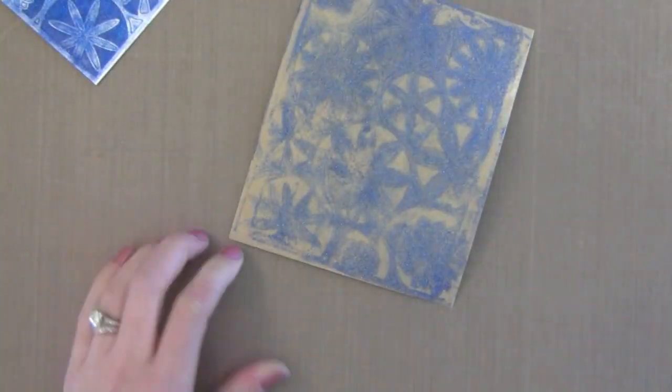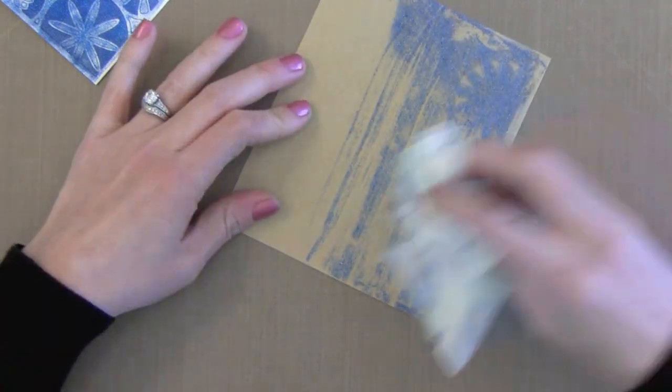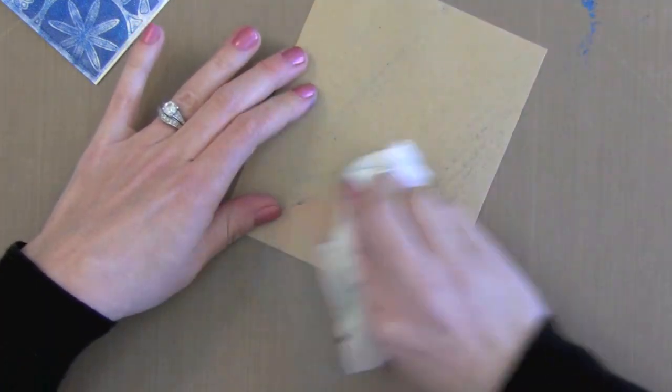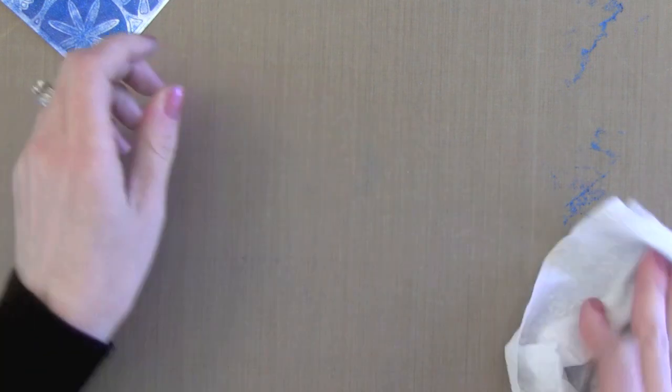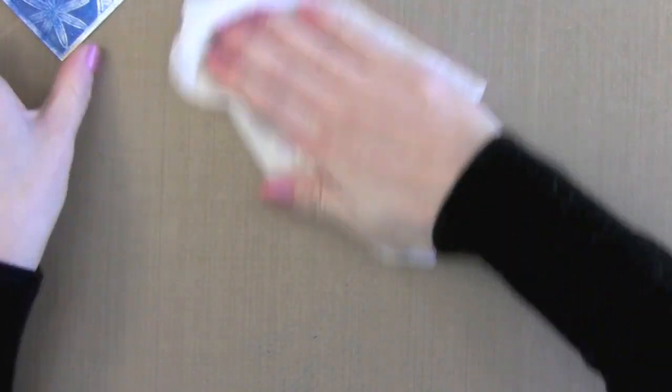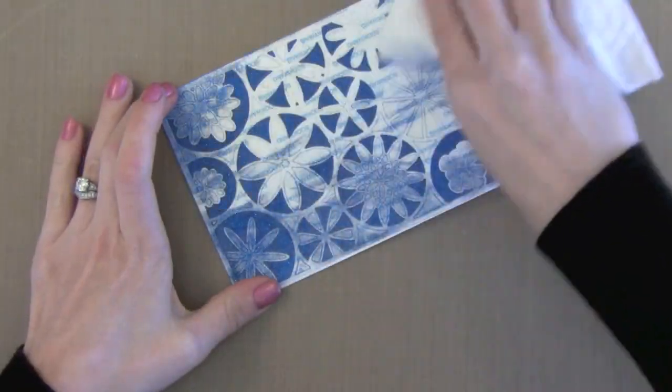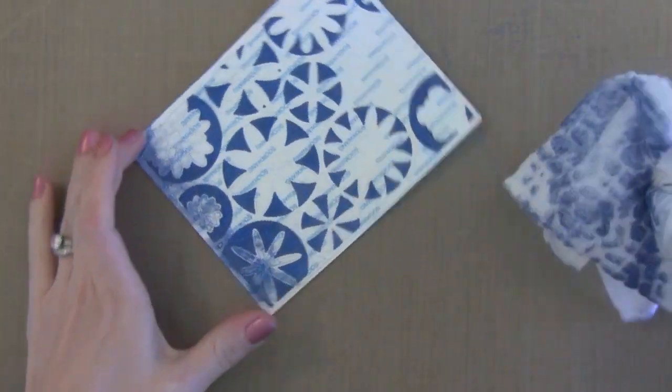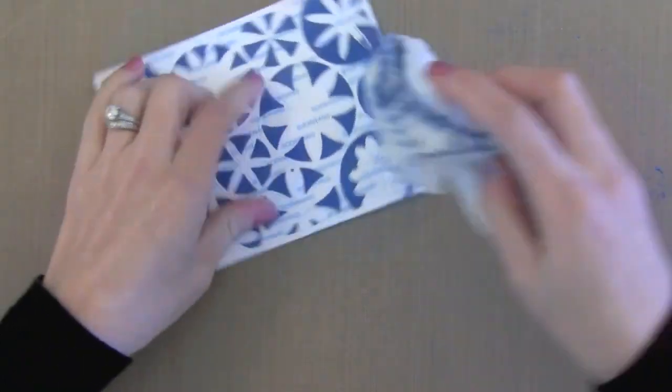If you don't have a bone folder you can use anything to really press this in. Just rub across very firmly. So now notice I have glitter everywhere. Don't panic. Grab a Swiffer dusting cloth. This is a great tool for crafting because it cleans up glitter very easily. What I recommend is cutting it up into a little piece because a little goes a long way. You can quickly wipe away all that extra glitter.